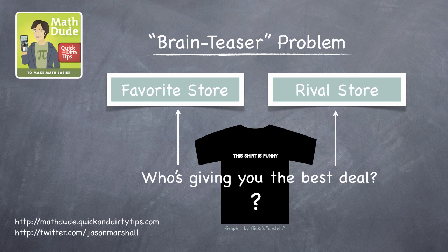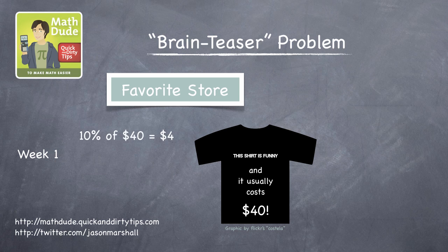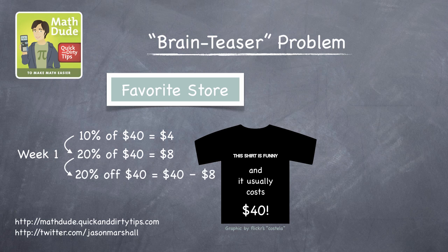Is one store giving you a better deal than the other? To figure this out, let's imagine the original price of the shirt is $40. So what's the on-sale price from your favorite store? For the first week's 20% discount, 10% of $40 is $4, so 20% of $40 is $8, and therefore 20% off of $40 must be $40 minus $8, or $32.